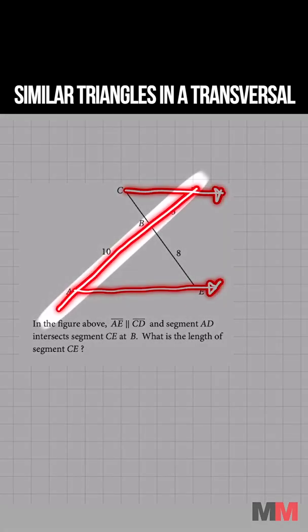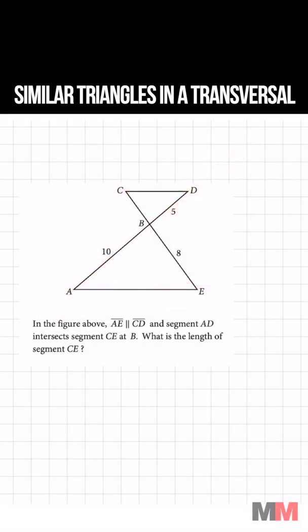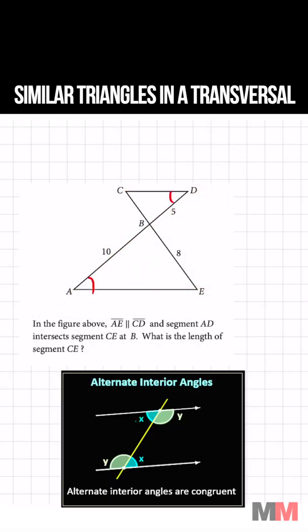If you look at this picture we got a transversal AD that cuts through two parallel lines, you know that the alternating interior angles are congruent.